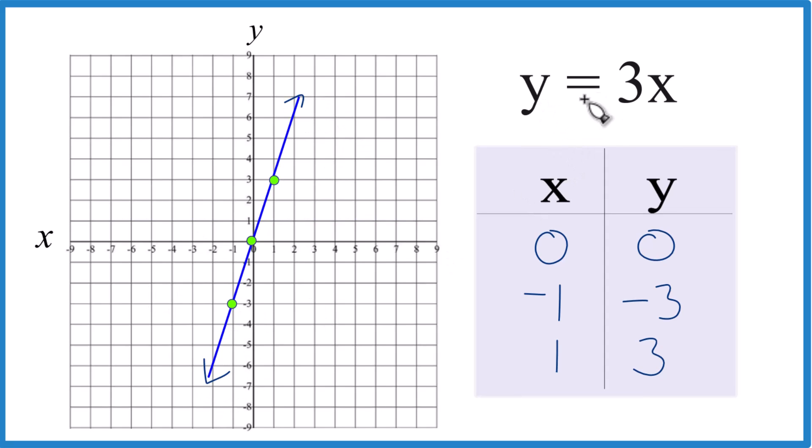That's the graph for y equals 3x, using a table of values. If you need help using slope-intercept form, there's a link in the description and at the end of this video. This is Dr. B, and thanks for watching.